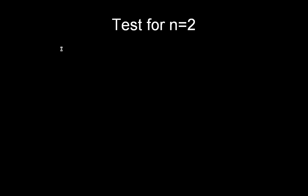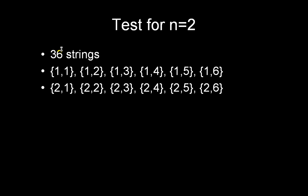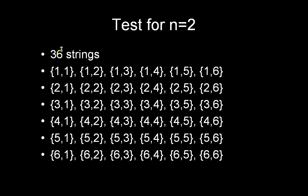And here they are, listed from one, one all the way through six, six. Let's go ahead and pick out the successful ones. So the ones that have at least one four in them: there's one there, one there, one there, and then this row, and then here are a couple more.